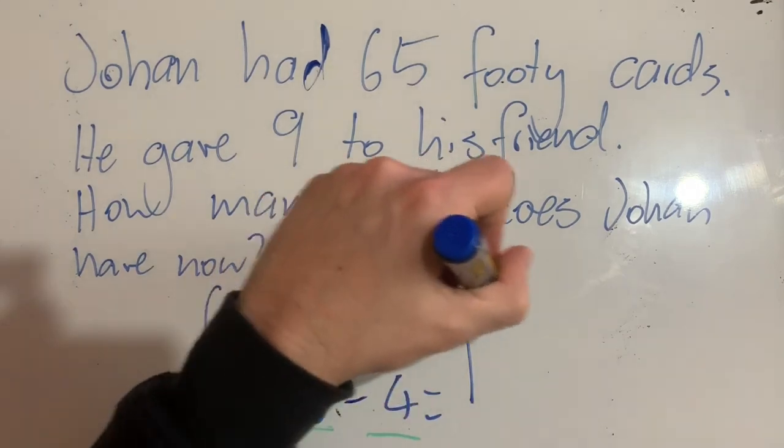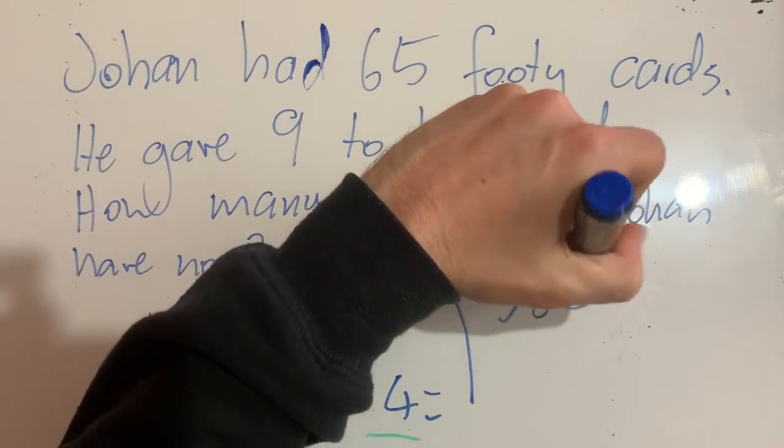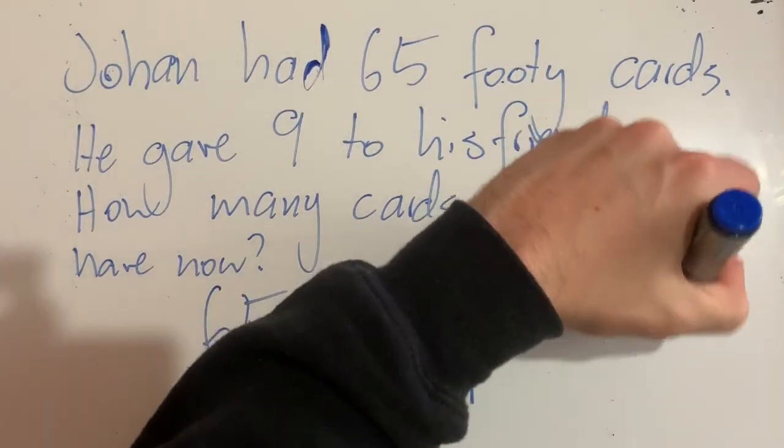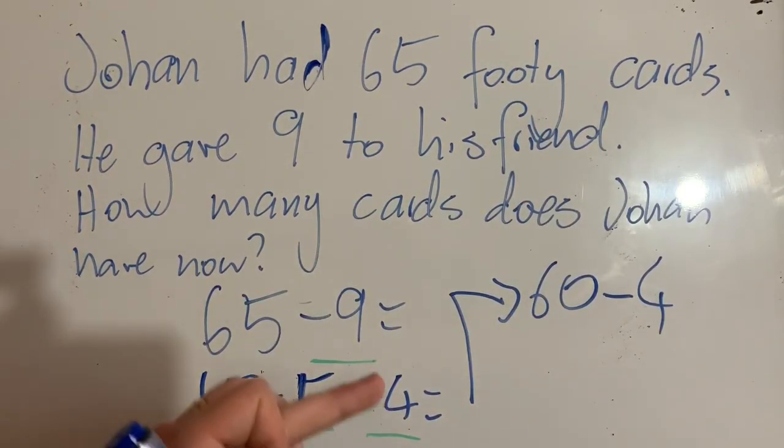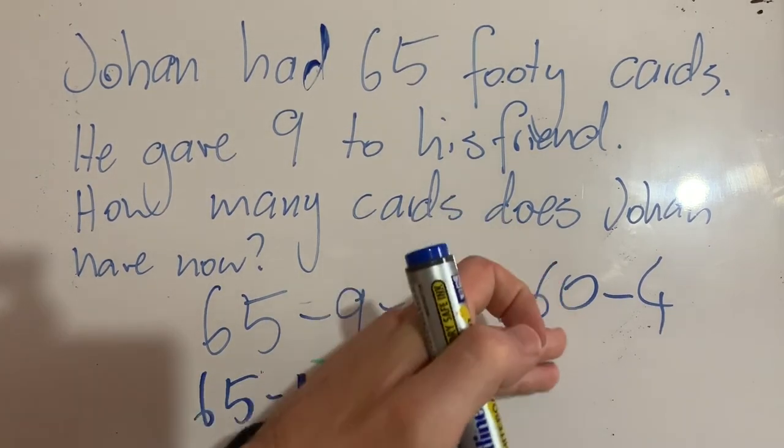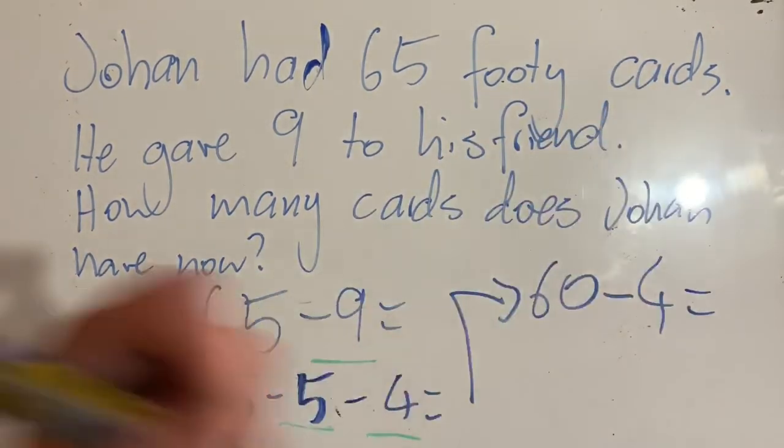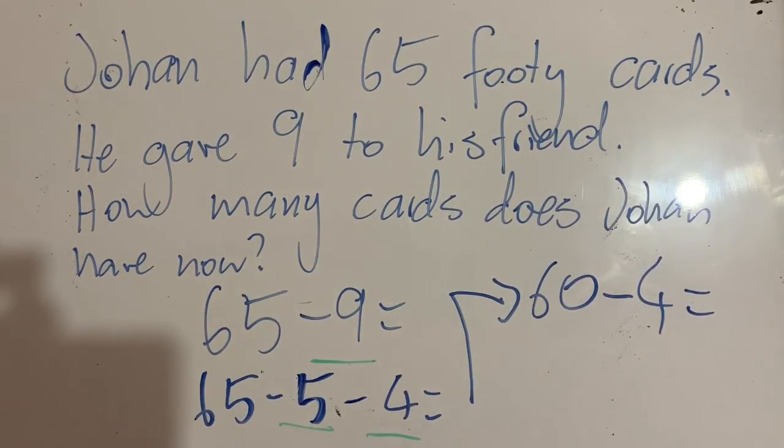So 65 minus 5 equals—I'm going to come up here so I don't run out of space—now I can take 5 away from 65, which will be 60 minus 4 now. Because we've dealt with this 5, we still need to take away the 4. So we have subtracted 5 from 65 to get 60. Now I need to deal with the 4. So 60 minus 4—well, 10 minus 4 is 6, so 60 minus 4 is 56.